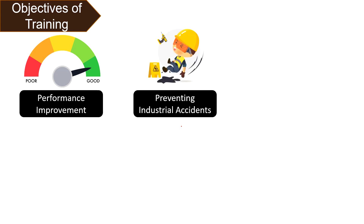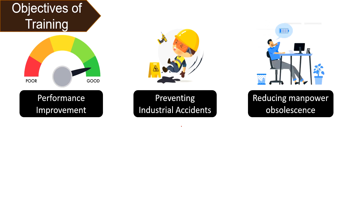Training helps employees in leveling up their performances. It also helps in preventing industrial accidents — workers learn to perform tasks the right way and how to handle machines, which decreases the chances of accidents. Preventing manpower obsolescence is another benefit: because of changes in technology and increased competition, workers need to update themselves and learn new methods of performing the job.